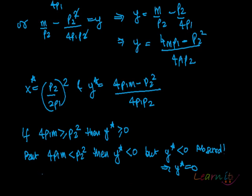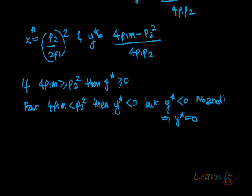Now if y star would be zero, then the entire thing is going to be spent over x. So your budget line would be like this because nothing is going to be bought of y. So your x would be m by P1.